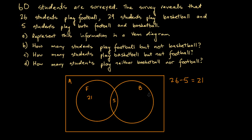Now for the basketball-only region — students who play basketball but not football. We know 29 students play basketball in total, and 5 of those also play football. So the number who play basketball but not football is 29 minus 5, which equals 24. So we put 24 in that region. Collectively, 29 students play basketball.